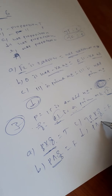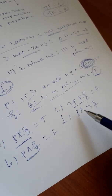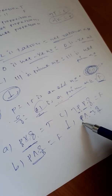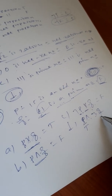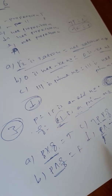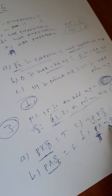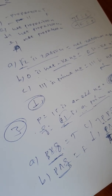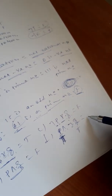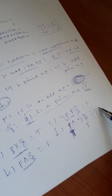Now for p and the negation of q. p is true. The negation of q — since q is false, the negation of q is true. So we have true and true. That is what I want to say.